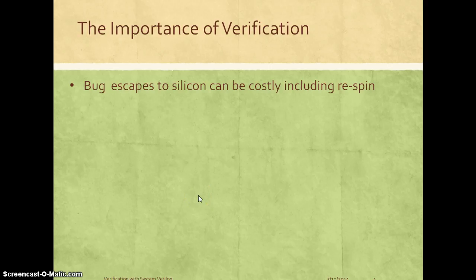It's also important to understand that any bug that escapes this design process all the way into the silicon can be very costly and can also result in a respin of the same chip. Unlike software which can be patched for any bugs even after productization, any bugs that can escape to an actual silicon in the chip design can be very costly. That's why it's also important to understand the importance of verification in the overall chip design process.